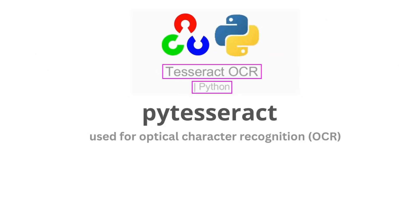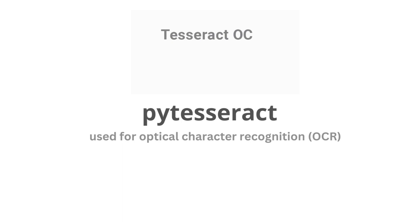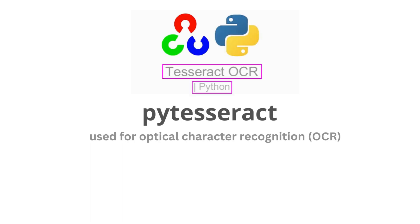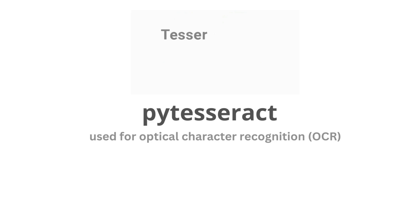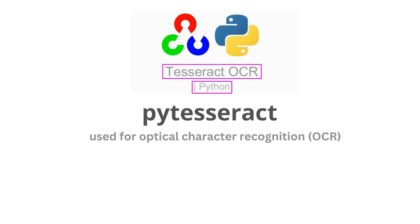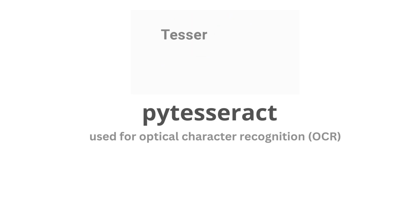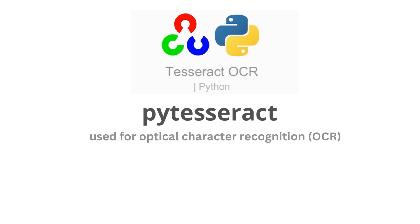Next in the list is PyTesseract. It is used for optical character recognition (OCR), allowing you to extract text from images and PDF files. This is helpful when you want to extract information from invoices, purchase orders, books, etc. Whenever there is text in a Word document or a PDF document that you want to extract, you can use this library.